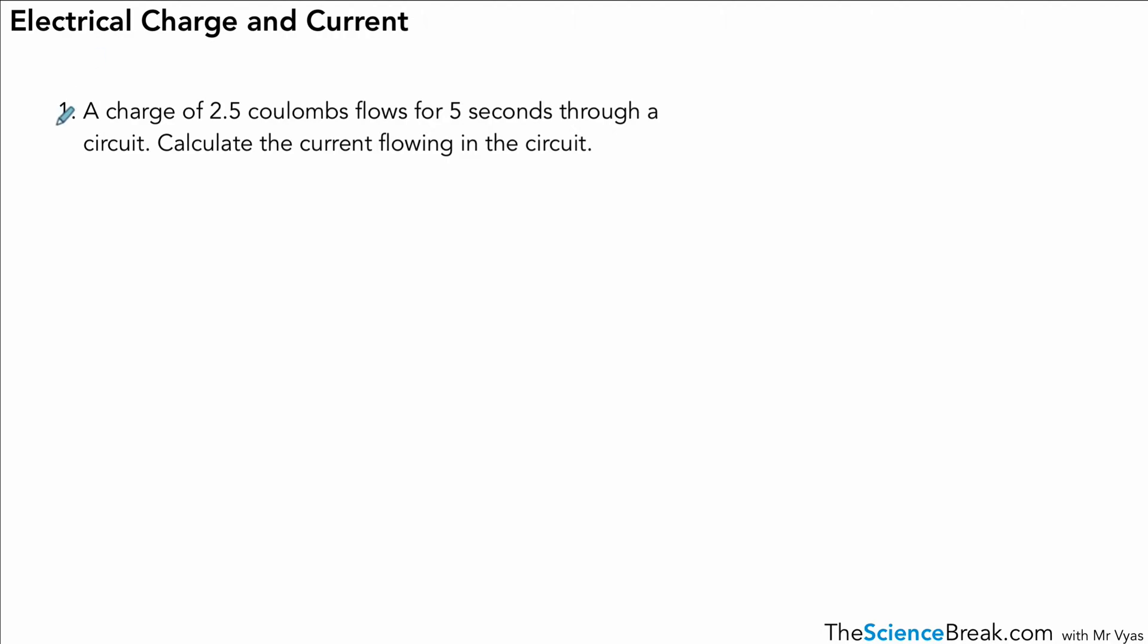Now this one is very slightly trickier. We've got a charge of 2.5 coulombs, which flows for 5 seconds through a circuit. Calculate the current flowing in the circuit.